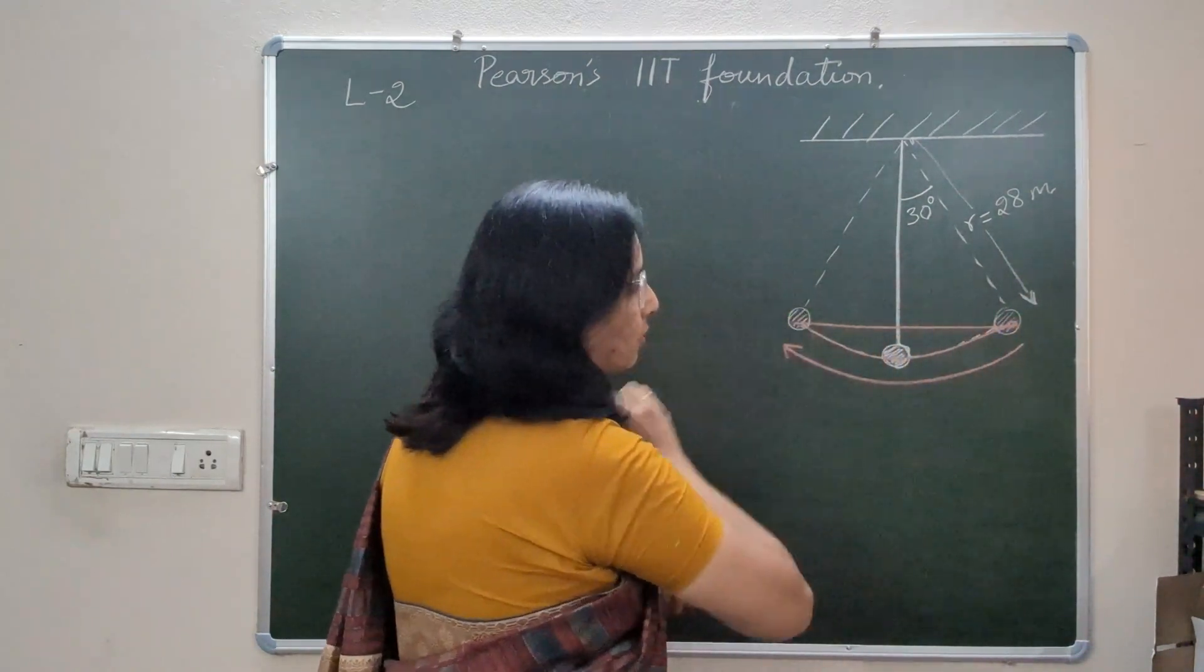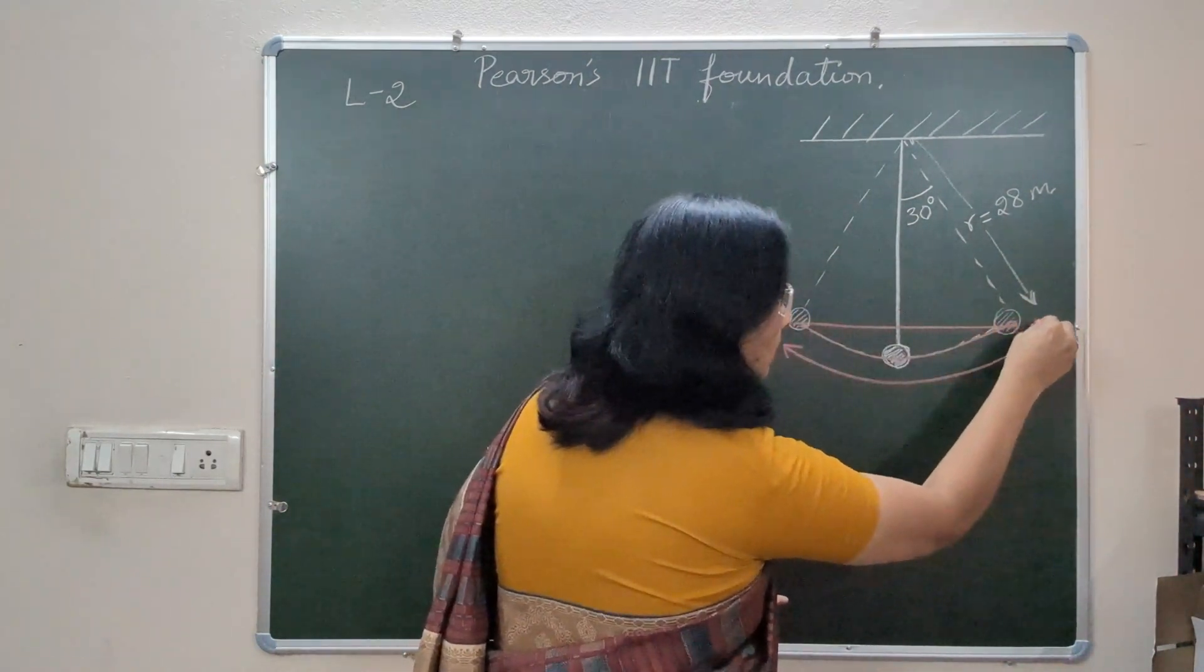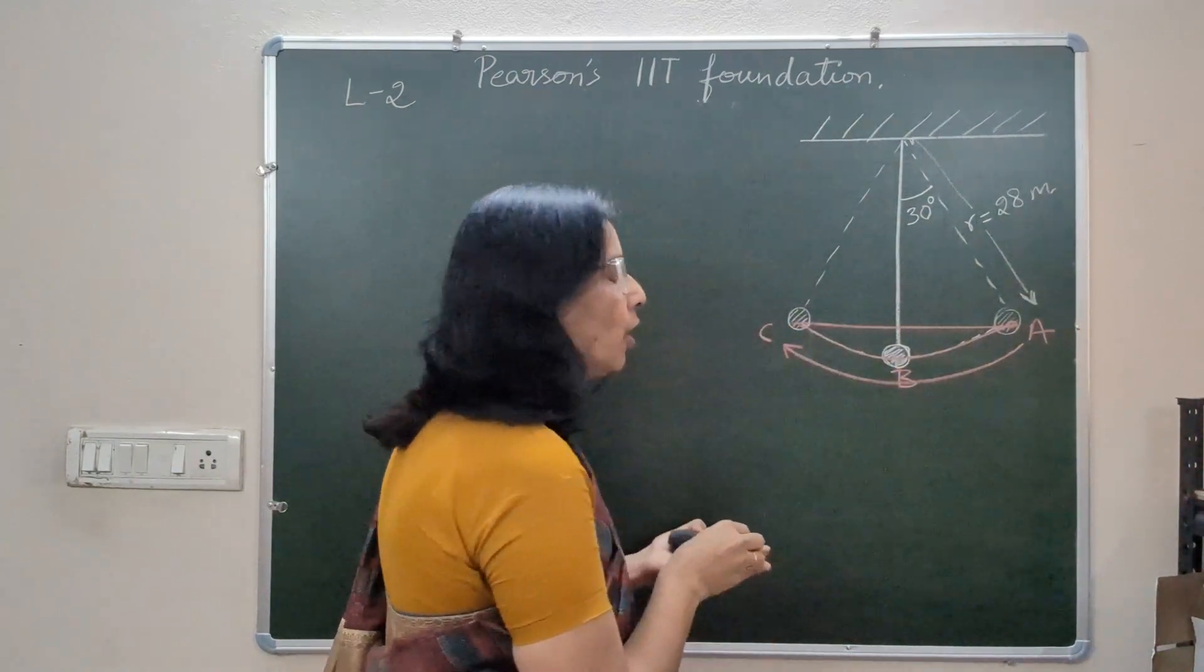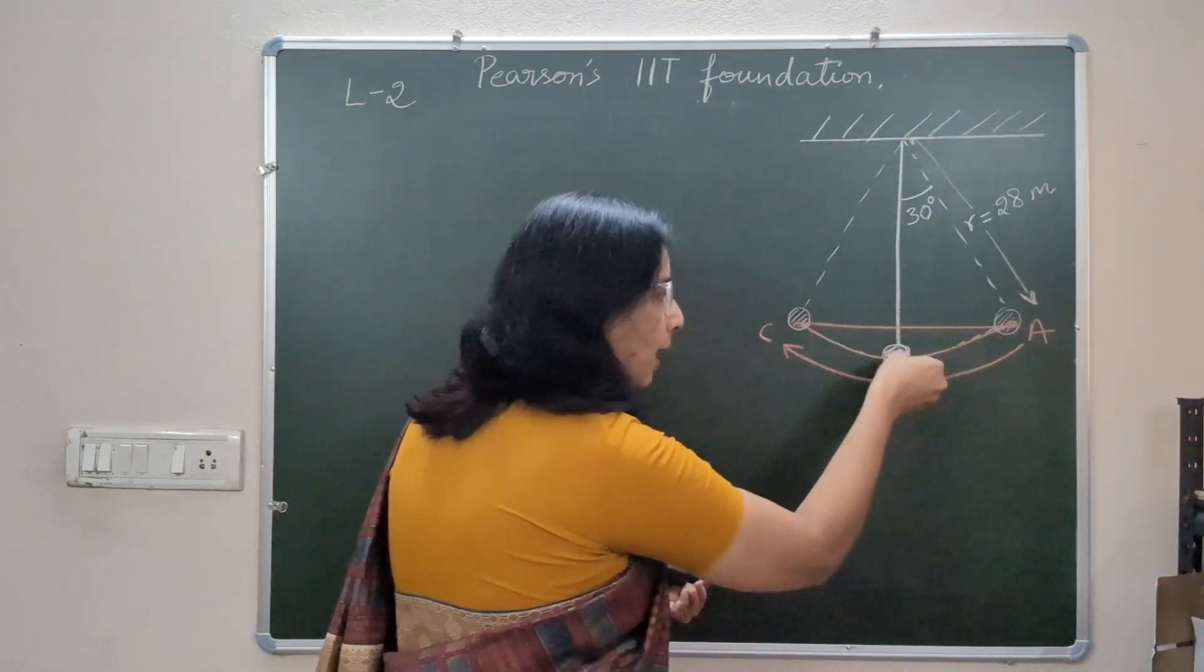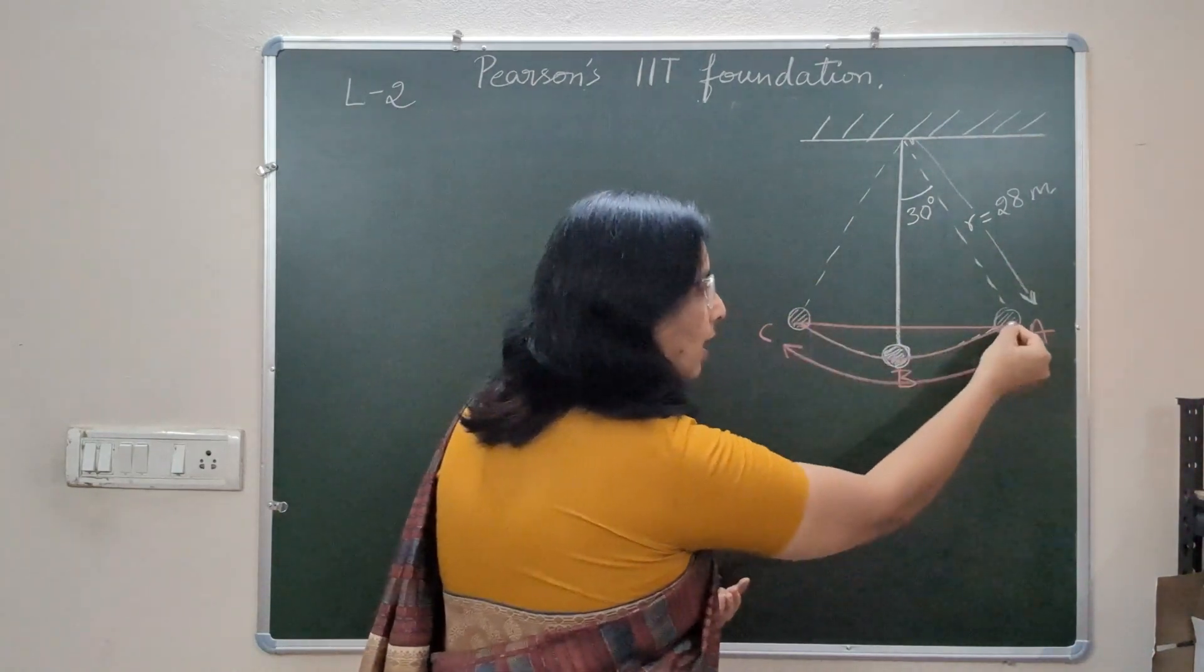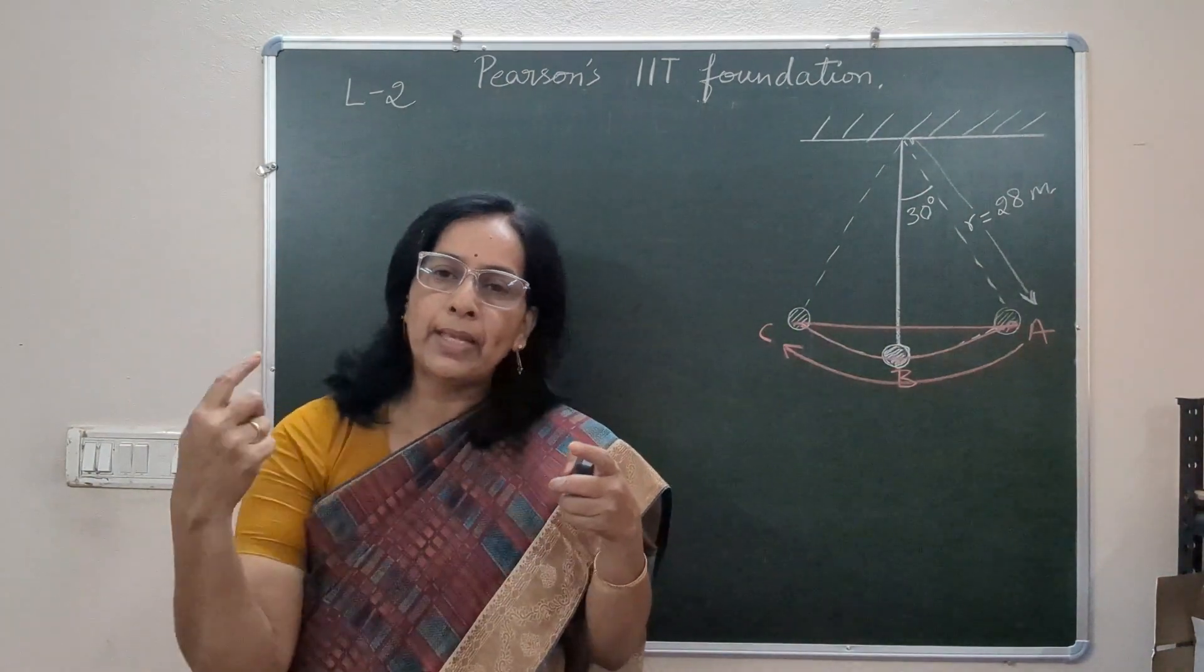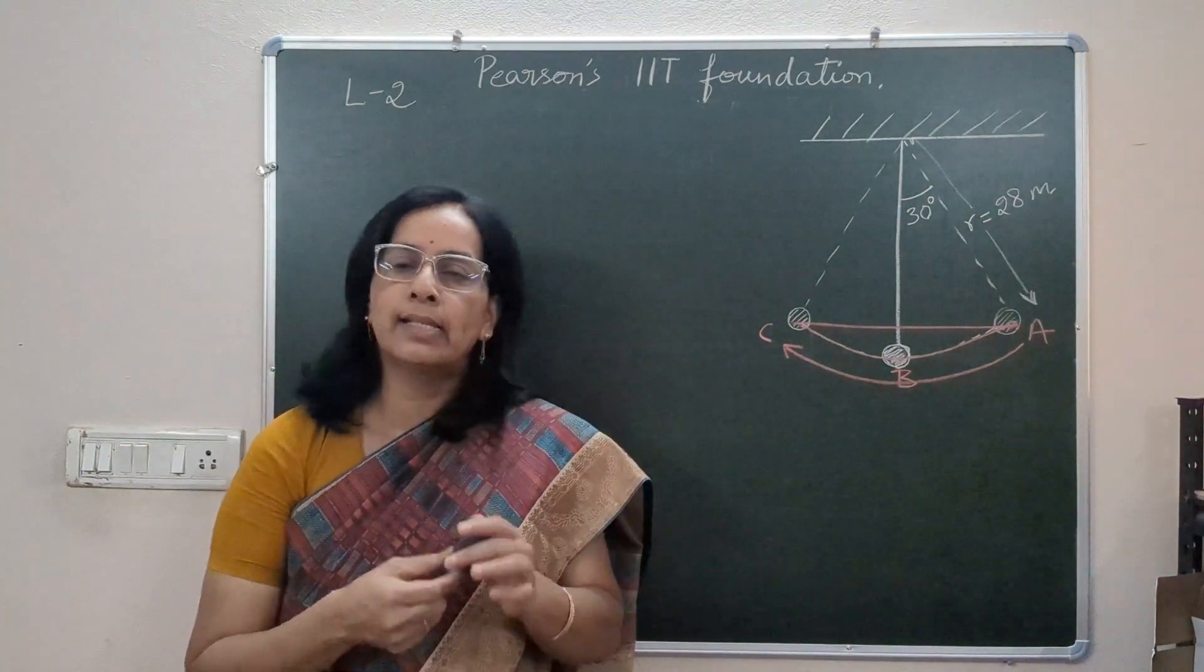Let me call this as A, this as B, this as C. So we have to find ABC distance and we have to find AC distance. So ratio of ABC to AC is the requirement.